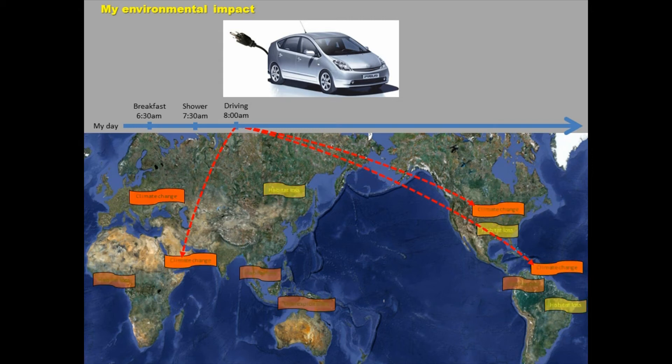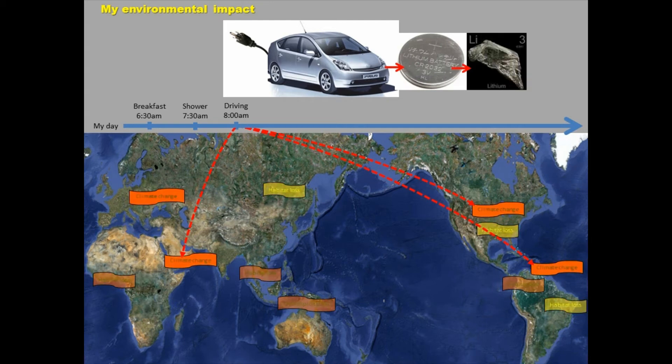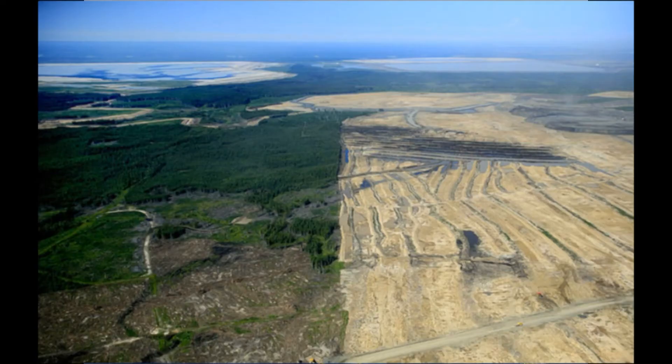Potentially, we could afford an electrical car. However, one of the main parts of these cars are batteries, and these batteries require lithium. Lithium is underground, so for us to have access to this element, we have to remove the upper layer of the soil, and basically all of those habitats are lost.